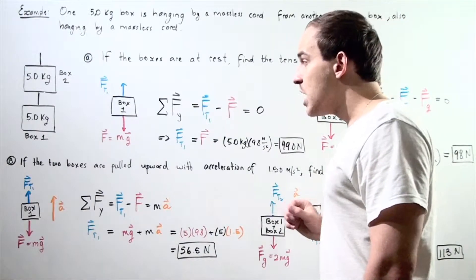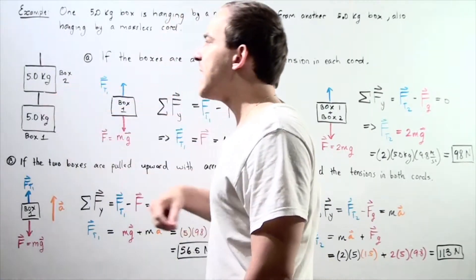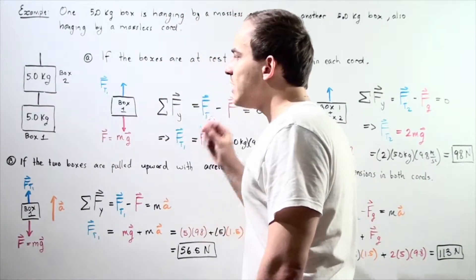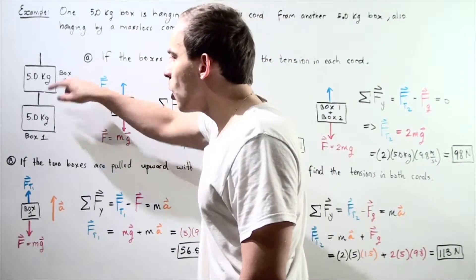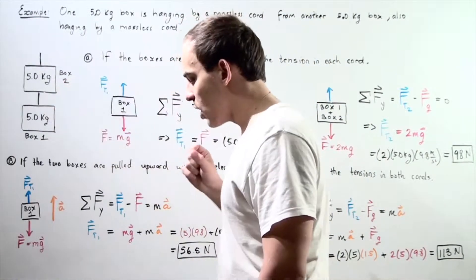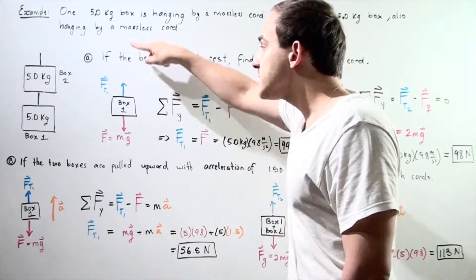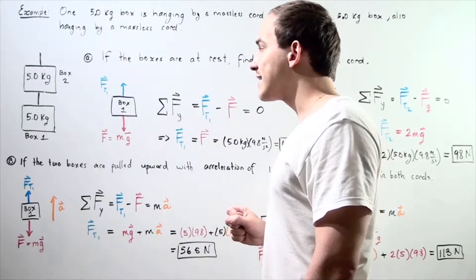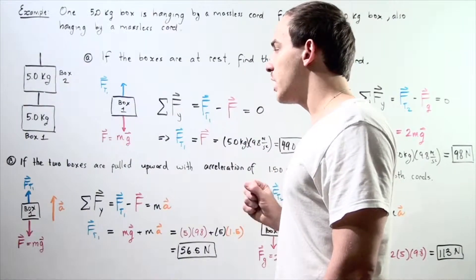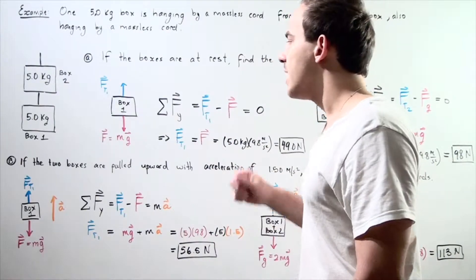Let's begin with part A. First we want to find the tension in rope one, and then the tension in rope two. In order to find the tension in rope one, we must find all the forces acting on box number one. Because box number one is stationary, the sum of all the forces acting along the y-axis must be zero.